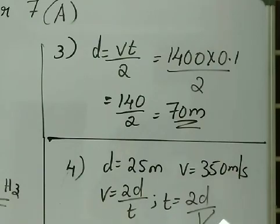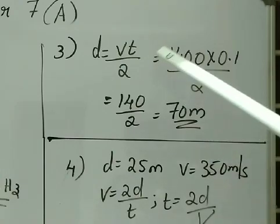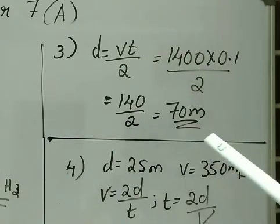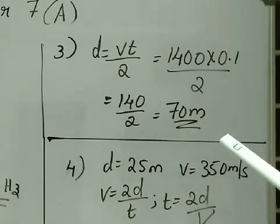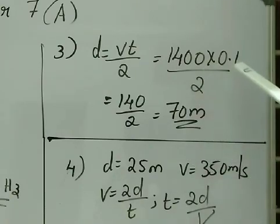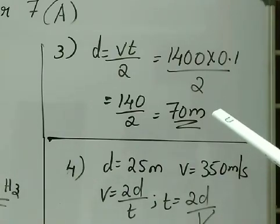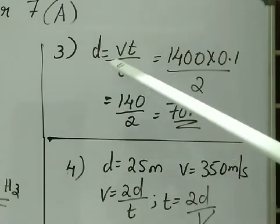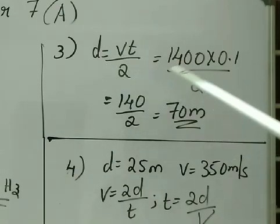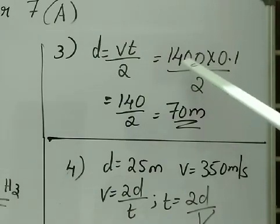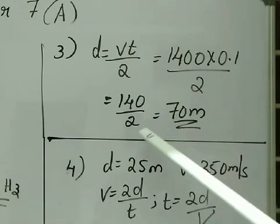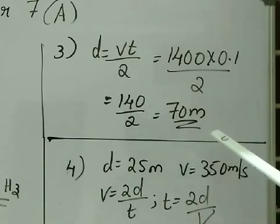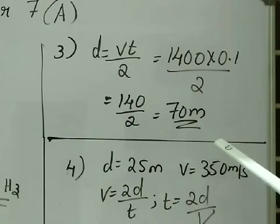Question number 3: what should be the minimum distance between the source and reflector in water so that echo is heard distinctly? The speed of sound in water is 1400 m/s. Time is again taken as 0.1 second for echo. D = V×T/2 = 1400 × 0.1 / 2 = 70 meter. So 70 m is the distance between source and reflector in water.